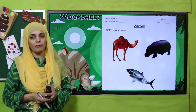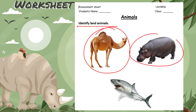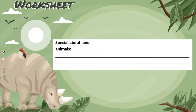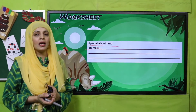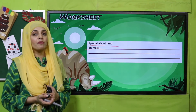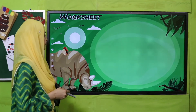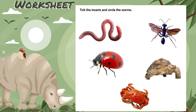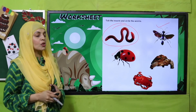For practice, you can download this worksheet from the description box below this video, or you can get it in print form from your teacher. Identify the land animals — camel and hippo, both are land animals. Special features of land animals: they have legs, they can move, crawl, and run, they lay eggs or give birth to live young ones, and they always make their homes on land. Tick the insects and circle the worms — a worm has no legs, an insect does. Pause the video and quickly finish the worksheet.